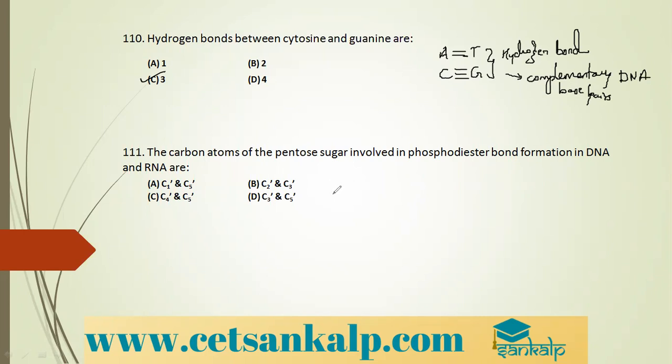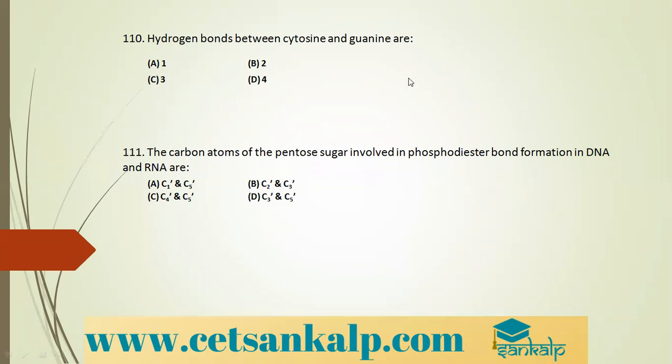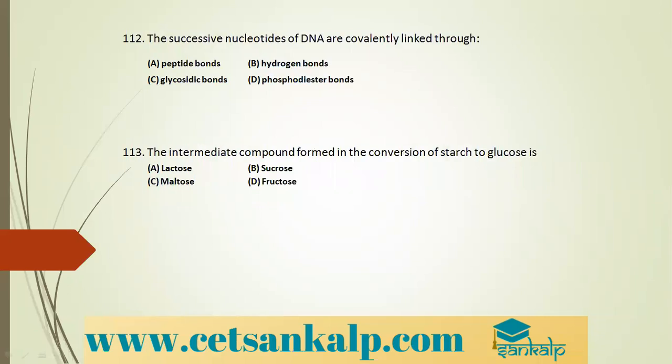Q: Carbon atoms of pentose sugar involved in phosphodiester bond formation in DNA and RNA are C3′ and C5′ — from the Watson–Crick double helix model. DNA is double-stranded; RNA is single-stranded. Q: Successive nucleotides of DNA are covalently linked by phosphodiester bonds. Peptide bonds are in proteins; glycosidic bonds are in carbohydrates. Correct option D.